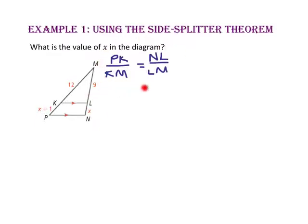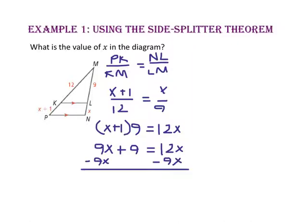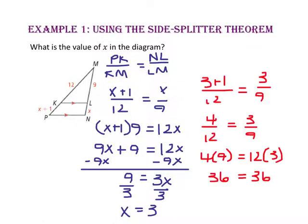Let's substitute the lengths into our proportion and use the cross product property — we'll multiply the extremes and the means. Using the distributive property, 9 times X is 9X and 9 times 1 is 9. Subtract 9X from both sides and 9 equals 3X. Divide both sides by 3 and X equals 3. Let's check our answer by substituting 3 in for X into our original proportion. Since 36 does equal 36, we know that we are correct.